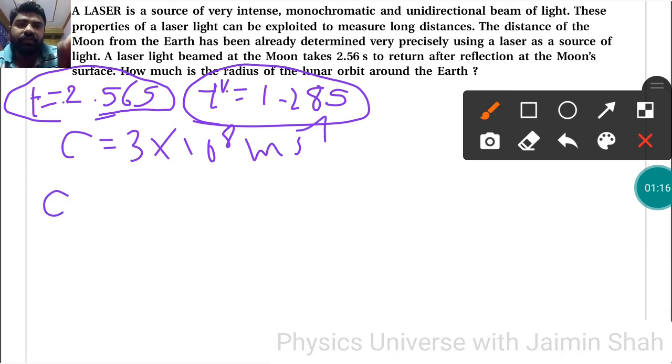Now we know that speed is equal to distance upon time. We have to find distance. So s is equal to c into t dash.